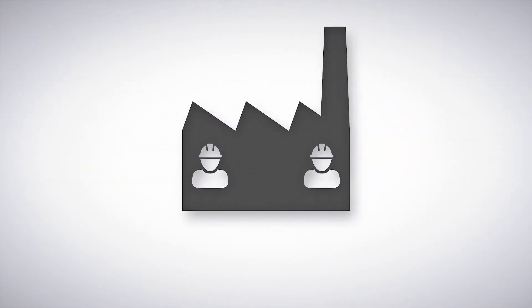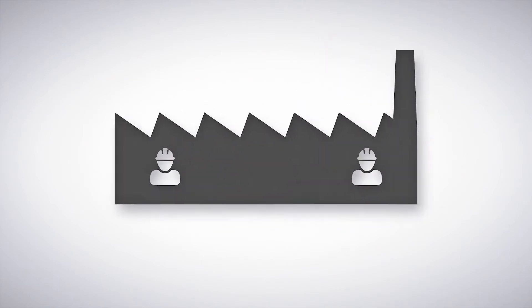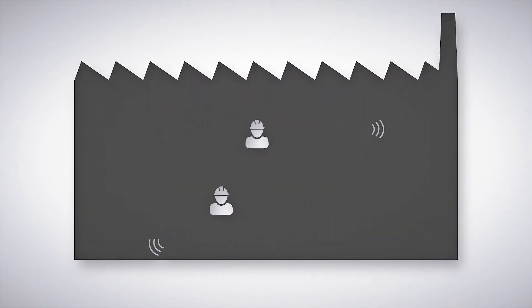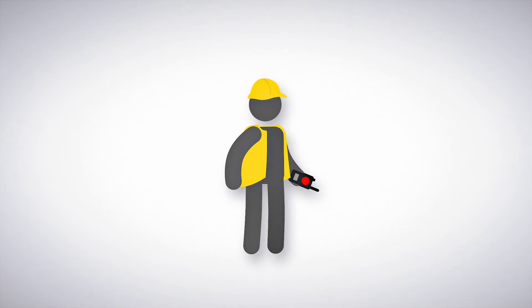Running an efficient factory is a coordinated effort, but noise, distance, and constant movement make communication difficult. How many ways could a portable visual device make it easier for workers to get the information and direction that they need?